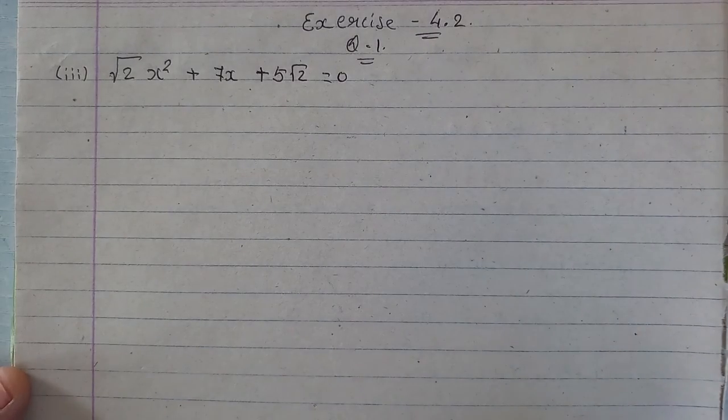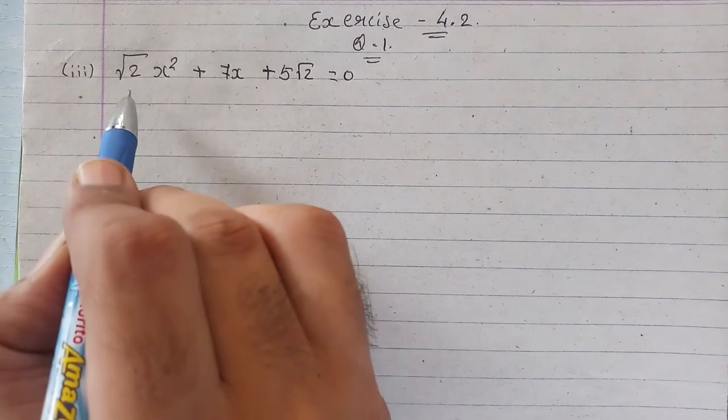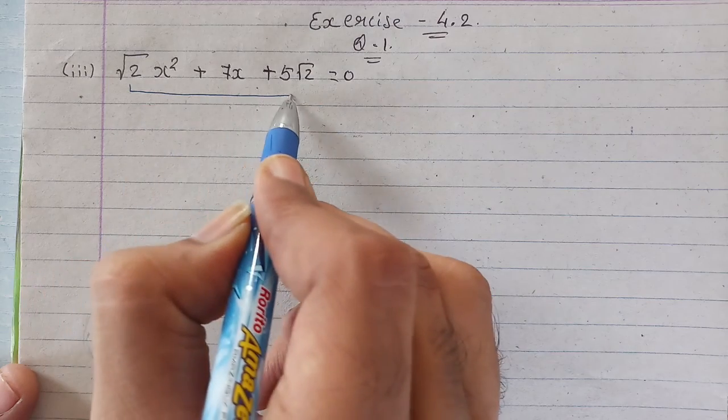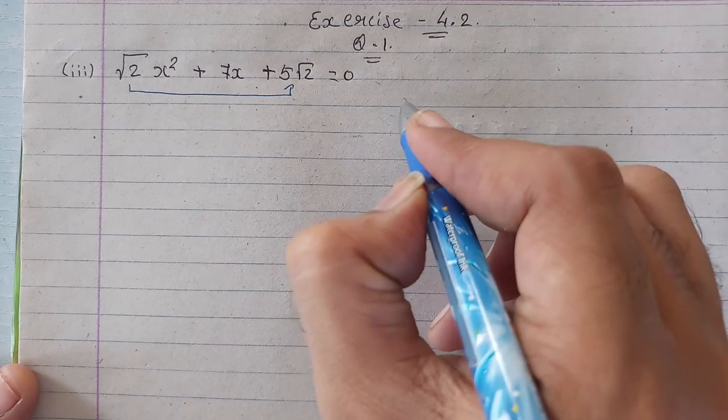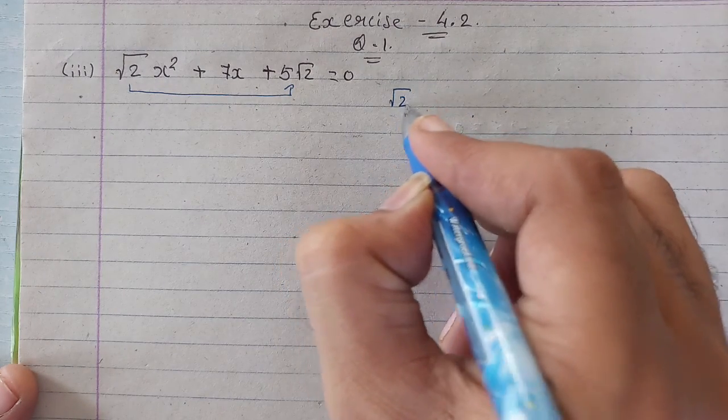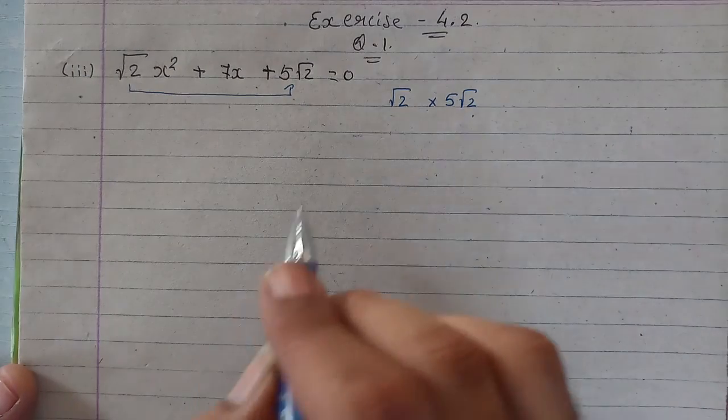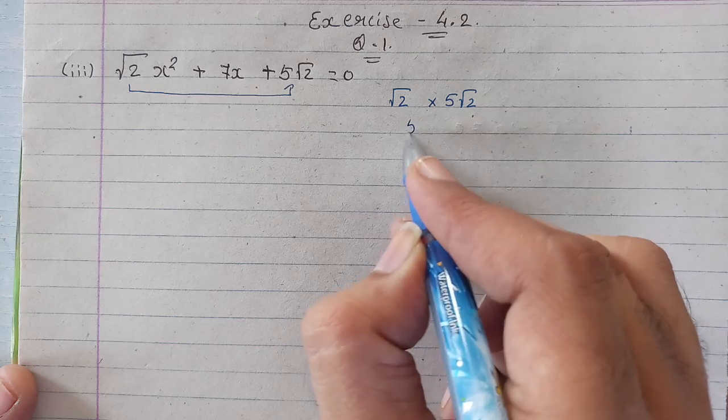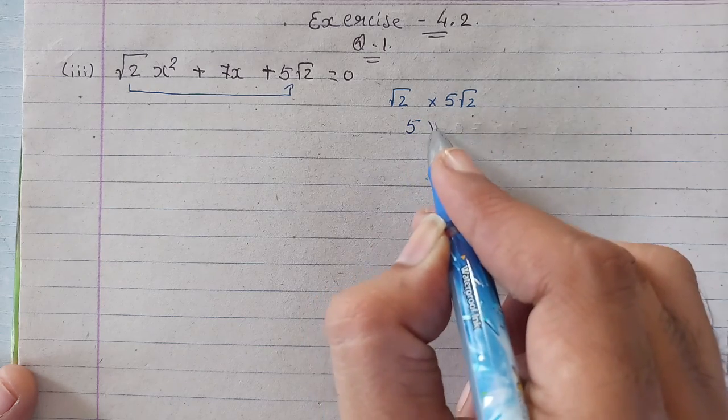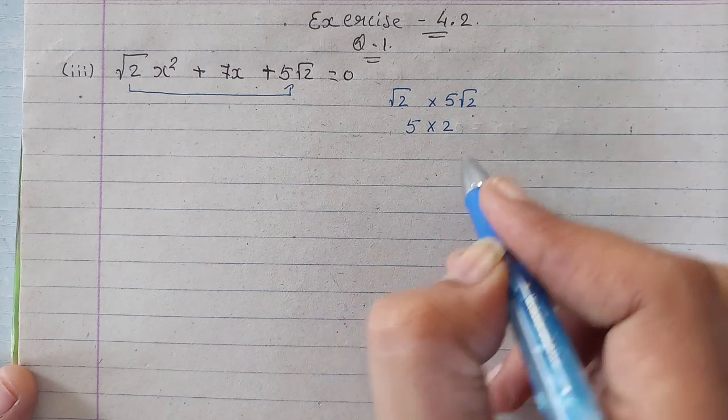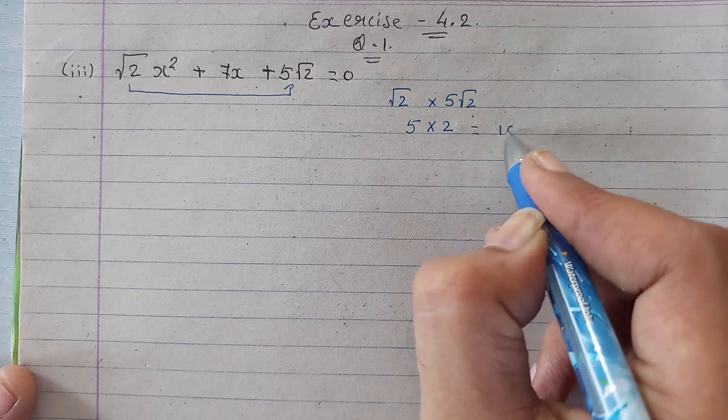As per the rule, first we will multiply the first term and last term. So, first term is root 2 and the last term is 5 root 2. Now multiply them: 5 will remain as it is and root 2 multiply root 2 equals 2. So, 5 into 2 equals 10.